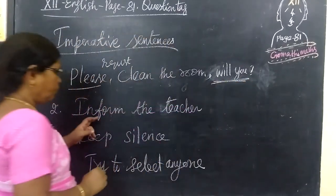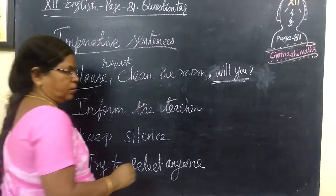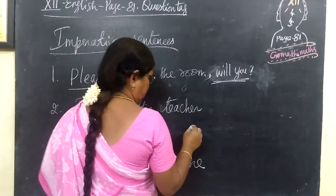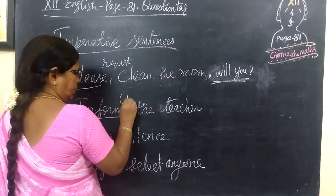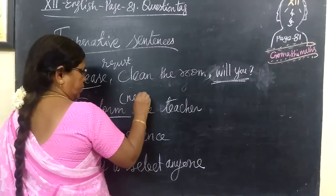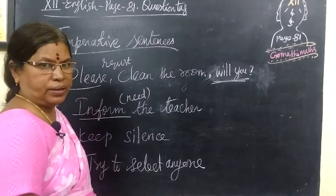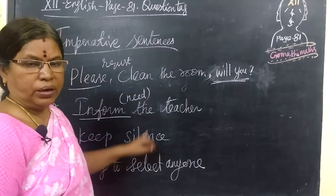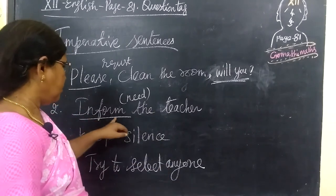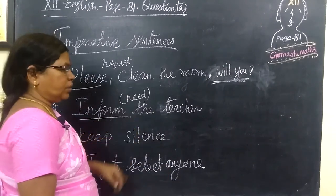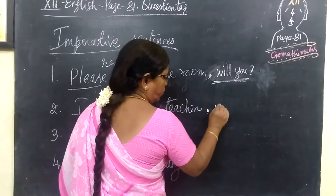Next: 'Inform the teacher.' This is a statement of need — you are in need to inform the teacher. So for this type of sentence, you write: won't you? Inform the teacher, won't you?